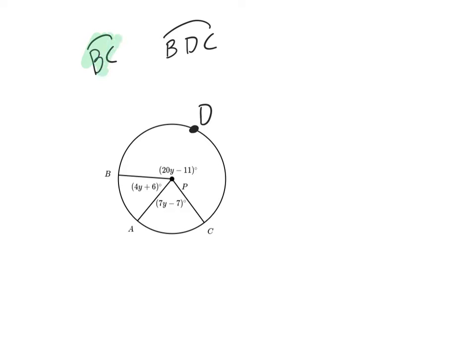If they ask for arc BC, you have to go the short way because it's only two letters. But if they ask for BDC, then you need to go the long way. If they ask for it with three letters, they want you to go the long way. If they ask for it with two letters, they want you to go the short way.